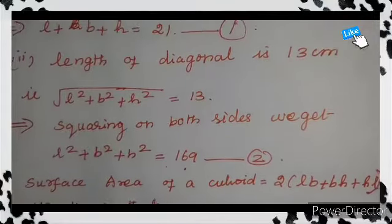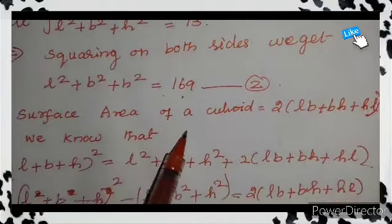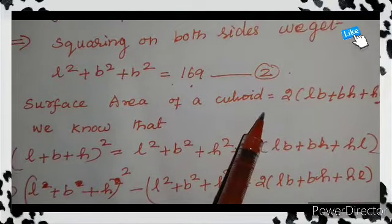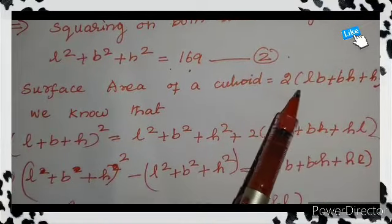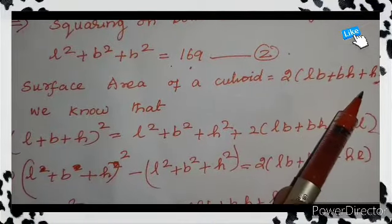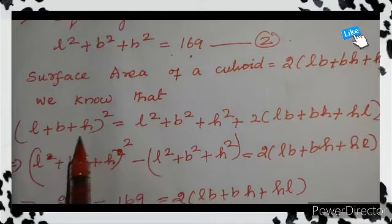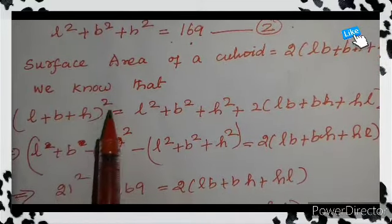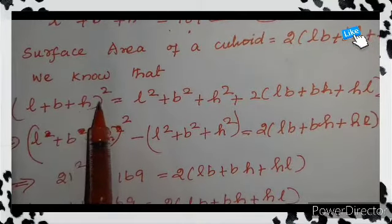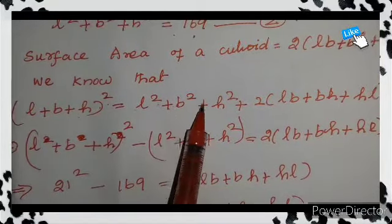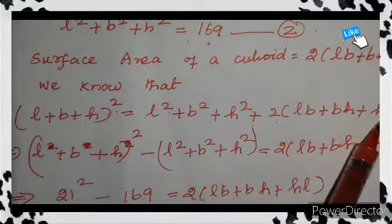Next, we are going to find the surface area of a cuboid. The formula for the surface area of a cuboid is 2 into LB plus BH plus HL. We need to find 2(LB plus BH plus HL). These terms are included in the expansion of L plus B plus H, the whole squared.